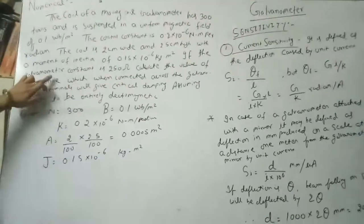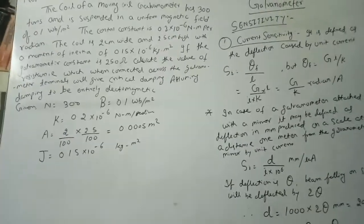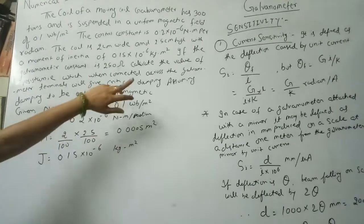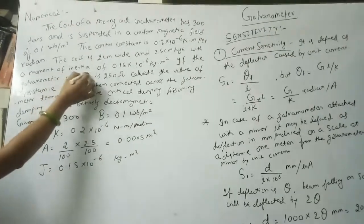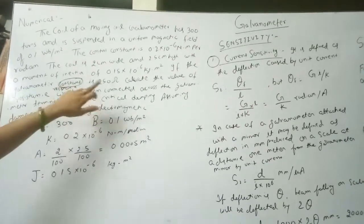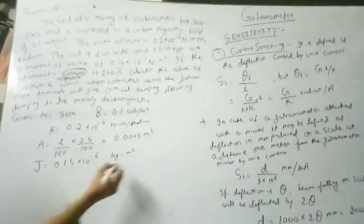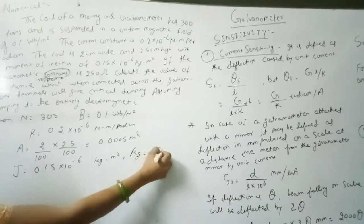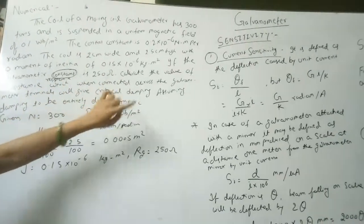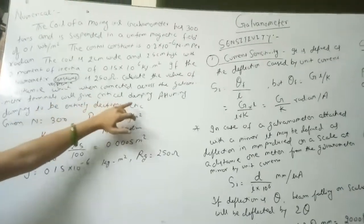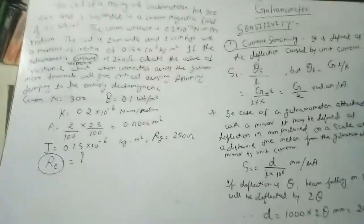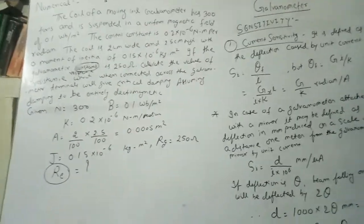The galvanometer resistance is 250 ohm, that is RG = 250 Ω. Now, calculate the value of resistance which, when connected across the galvanometer terminals, will give critical damping. That is, you have to find the external resistance RE.